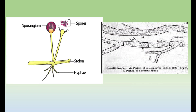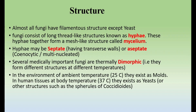Hyphae can be septate or aseptate. Aseptate means it does not contain any cross walls or transverse walls; the nuclei are not separated and are distributed all over the hyphae — this is also known as coenocytic or multinucleated hyphae. In septate hyphae, cross walls or septa are present and in each section a nucleus is present.